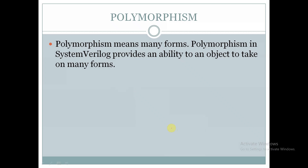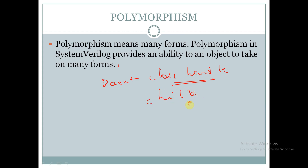Hello all. In this video we are going to discuss about polymorphism in SystemVerilog. Polymorphism means many forms. Polymorphism in SystemVerilog provides an ability to an object to take on many forms. With the help of polymorphism, a parent class handle can at a time act as a parent class as well as a child class handle. We will discuss this in later slides.